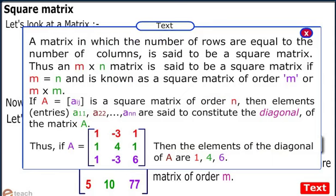A matrix in which the number of rows are equal to the number of columns is said to be a square matrix. Thus, an m×n matrix is said to be a square matrix if m equals n and is known as a square matrix of order m or m×m.